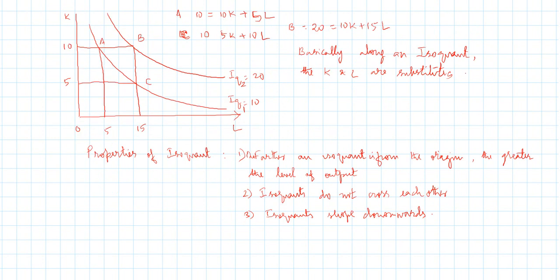On the isoquant diagram, labor is along the x-axis and capital along the y-axis. IQ1 represents 10 units of output. At point A, 10 units of capital and 5 units of labor produce 10 units of output. The same 10 units of output can also be produced using 5 units of capital and 15 units of labor at point C. Both A and C are on the same isoquant — different combinations of capital and labor, same level of output.